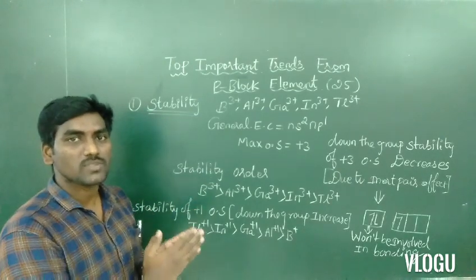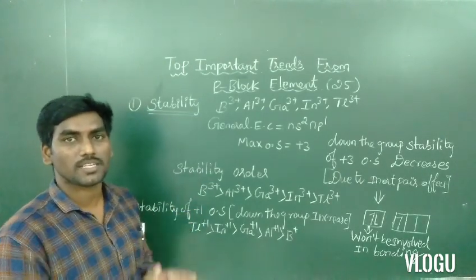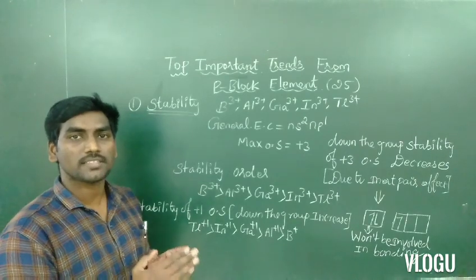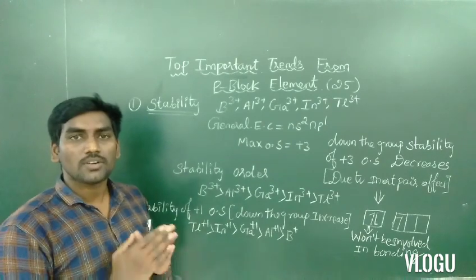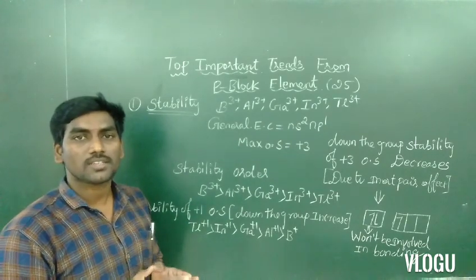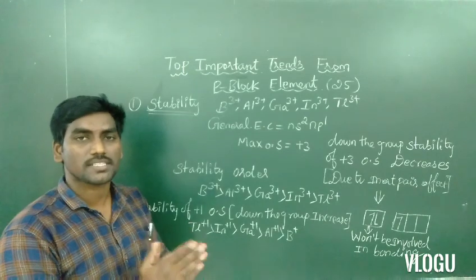The first step is the stability. So stability will be arranged. So boron group is the general electronic configuration ns² np¹. Outermost number of electrons, maximum oxidation state plus 3.